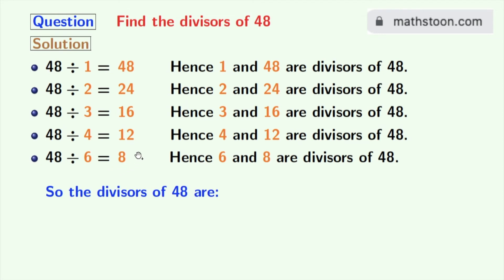Now, look that we have all the divisors of 48 which are in orange colors. So, these numbers are 1, 2, 3, 4, 6, 8, 12, 16, 24, and 48.